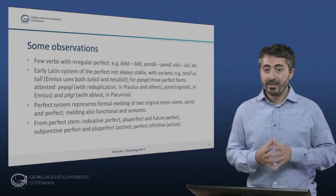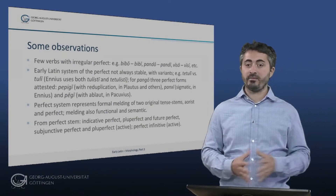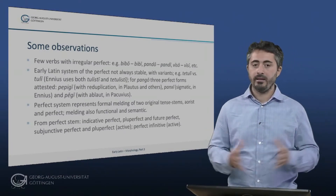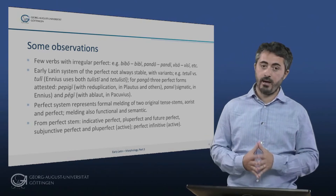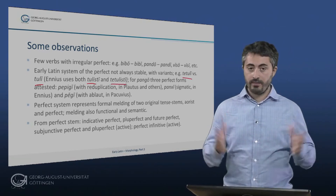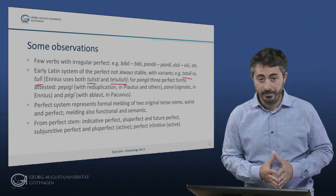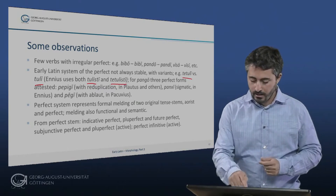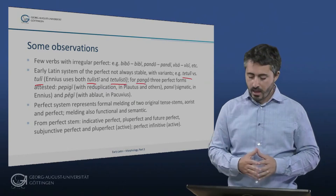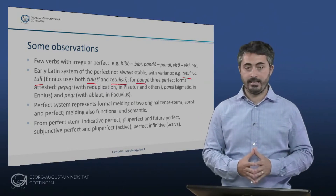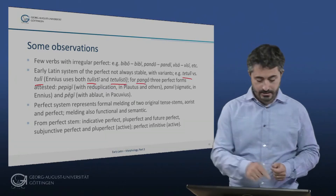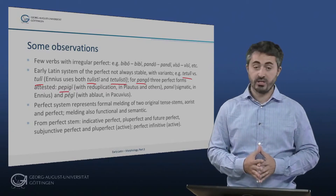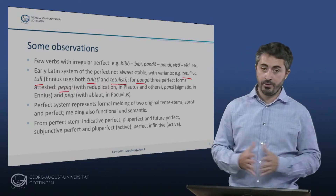In early Latin, the system of the perfect is not always stable and thereby optional variants are found. To give an extreme example, from the verb pango, there are three perfect forms attested in Latin. Pepigi, with reduplication, which is found in Plautus and other authors.